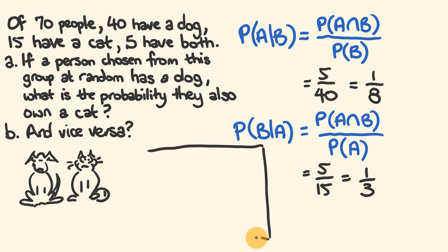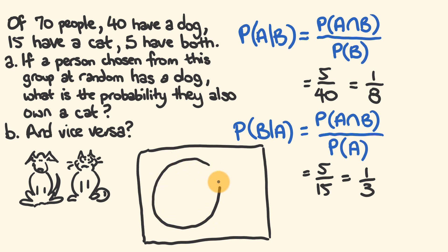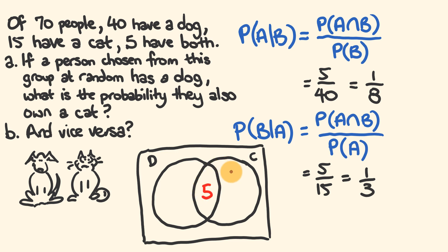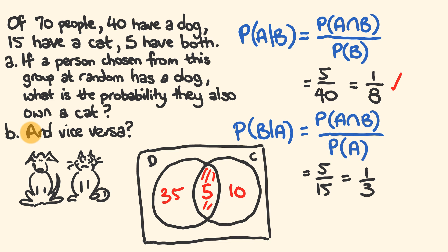We can also draw this as a Venn diagram for the dog people and the cat people. There are 70 people. We have a circle for dogs, a circle for cats, and an intersection for both. 5 have both. 15 have a cat, and 5 of those also have a dog, so 10 have a cat only. 40 have a dog, so 35 have a dog only. If a person chosen at random has a dog — that's one of these 40 people — the probability they also own a cat is 5 out of 40. That's that one-eighth. And if they own a cat, it's 5 out of 15 — that's one third.